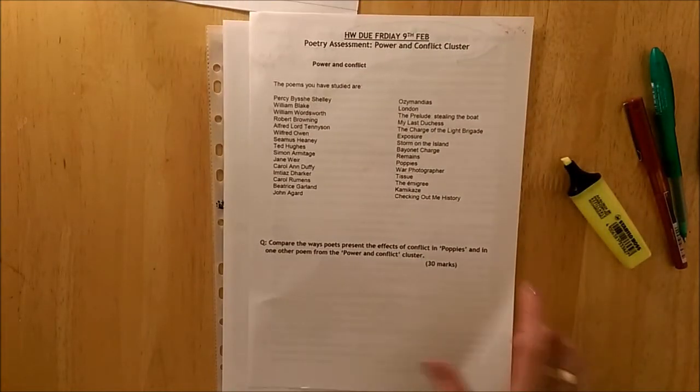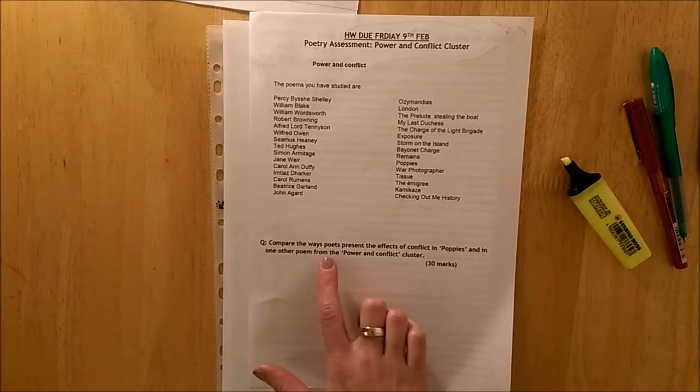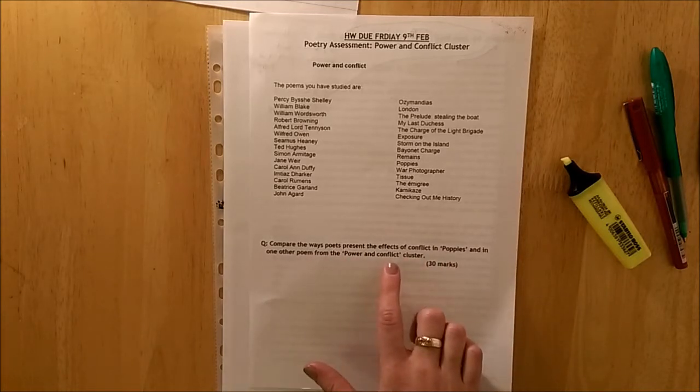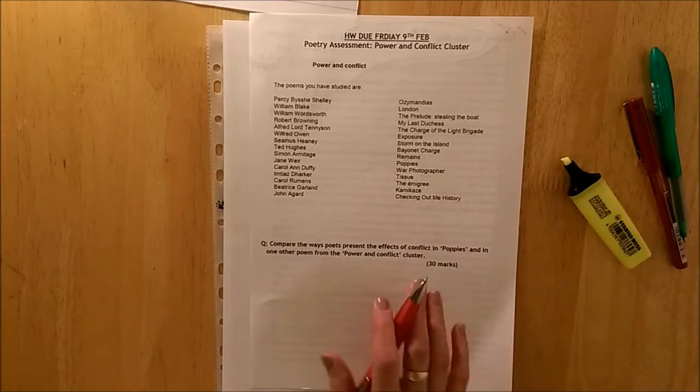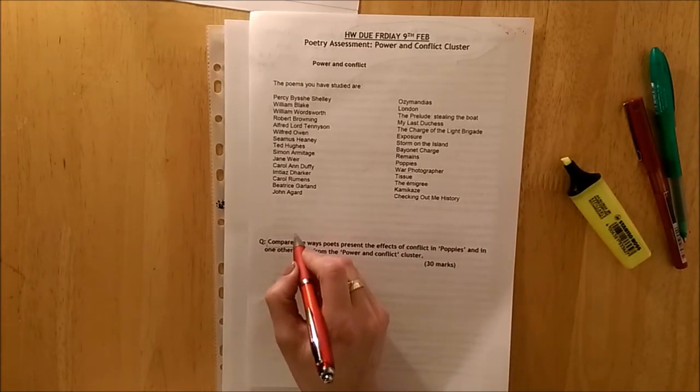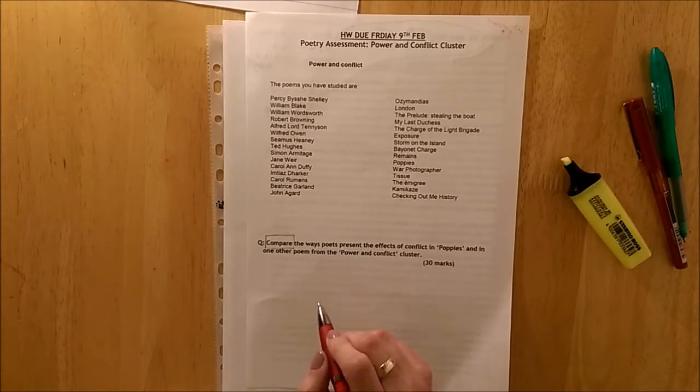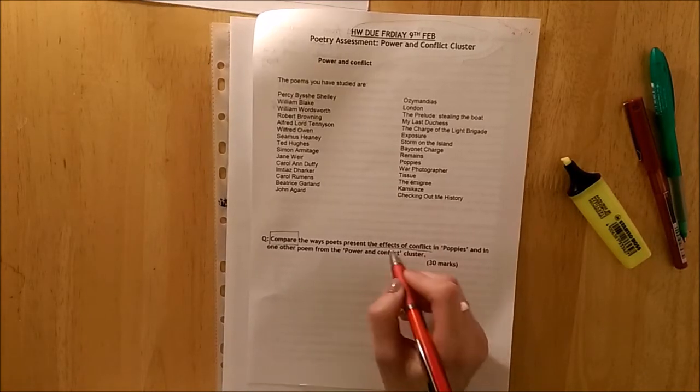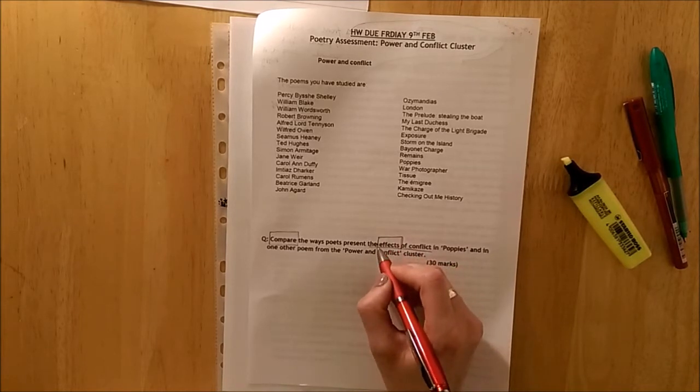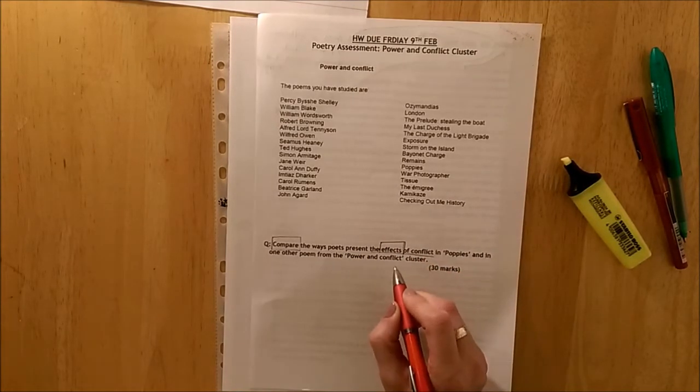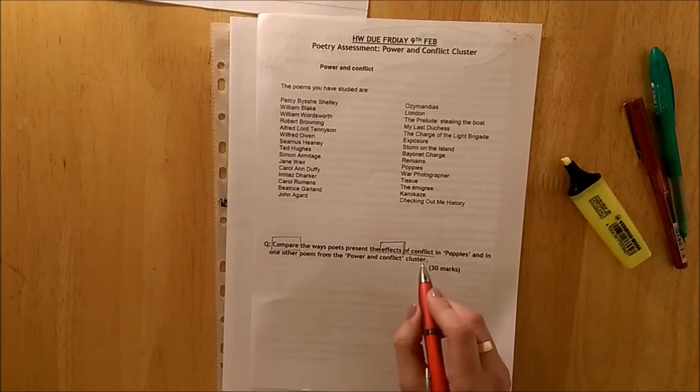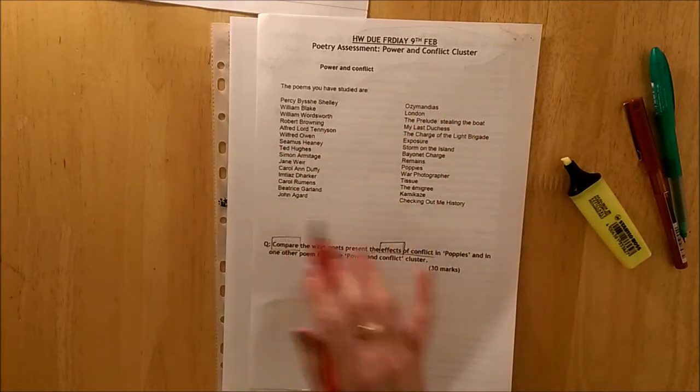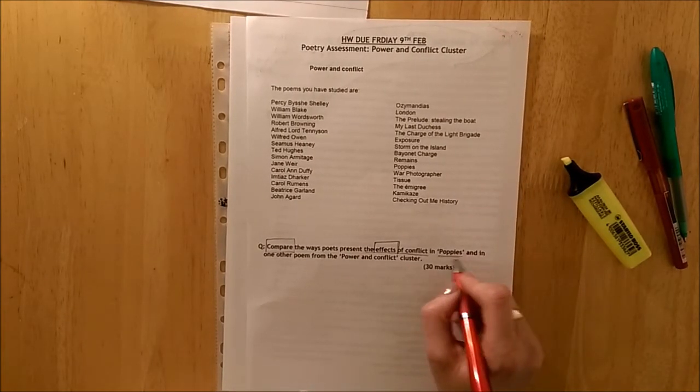So first things first. Our question today is, compare the ways poets present the effects of conflict in Poppies and one poem from the Power and Conflict Cluster. As always, we annotate this question. Our key word is compare. That is our skill. All of our AO1 marks are for comparing in this question. We are then looking at the effects of conflict. So already, I'm thinking about maybe the aftermath of war. The after effects of conflict. Then of course, our named poem is Poppies.